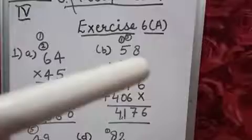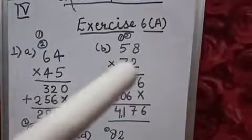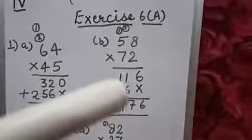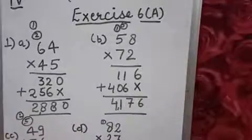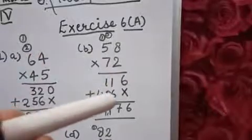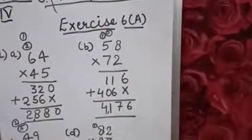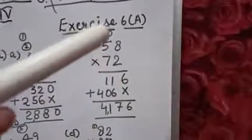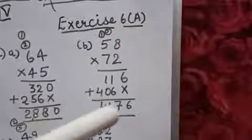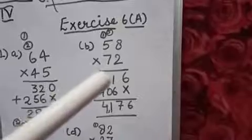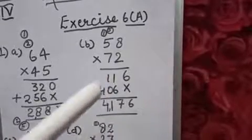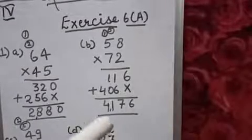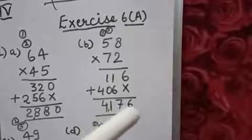Now, let's see question number B. Question B is 58 into 72. So, we will start with the left side. 2 8s are 16. 6 here. 1 carry. Then, 2 5s are 10. 1 carry. So, plus 1. It's 11. Now, we will put 1 cross here. Now, 7 8s are 56. 6 we will write here. 5 carry. Now, 7 5s are 35. 35 plus 5, 40. Now, we will add. 6 we will write as such. 1 plus 6, 7. 1 plus 0, 1. And 4 we will write. So, answer is 4176.